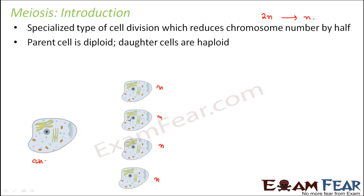In mitosis the daughter cells were all diploid; here the daughter cells are haploid. In mitosis, two daughter cells are formed from one parent cell, whereas in meiosis, four daughter cells are formed from one parent cell. These are some of the key differences between meiosis and mitosis.